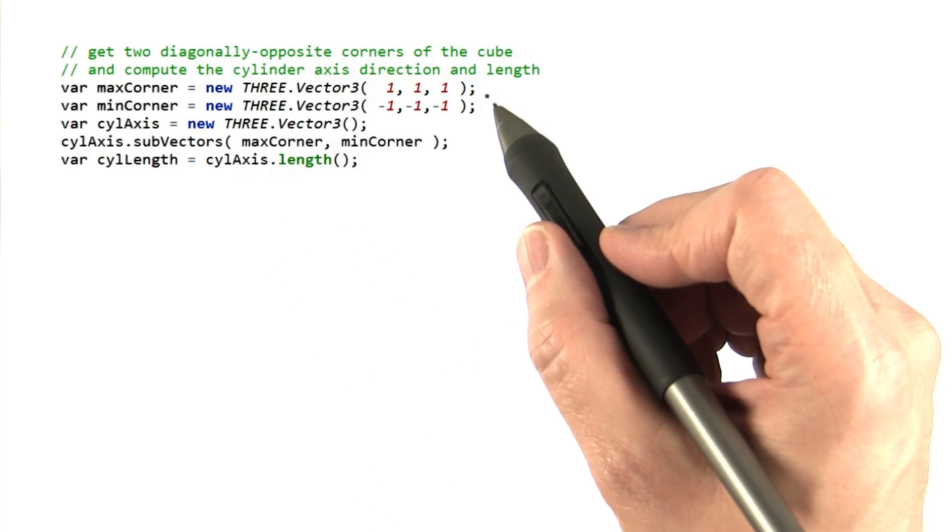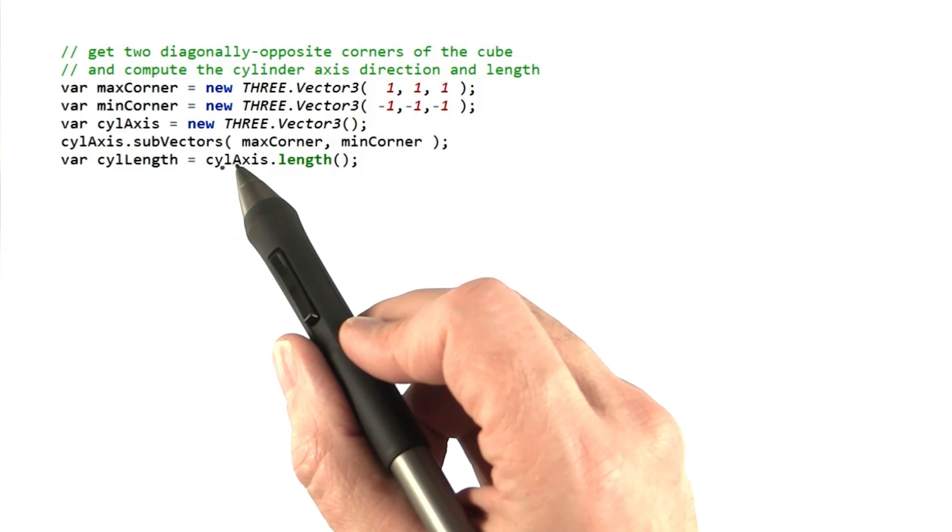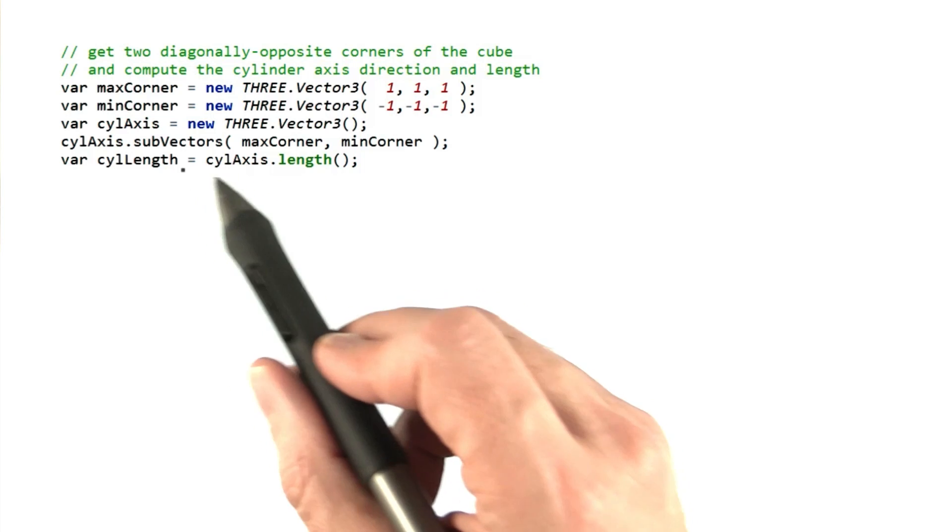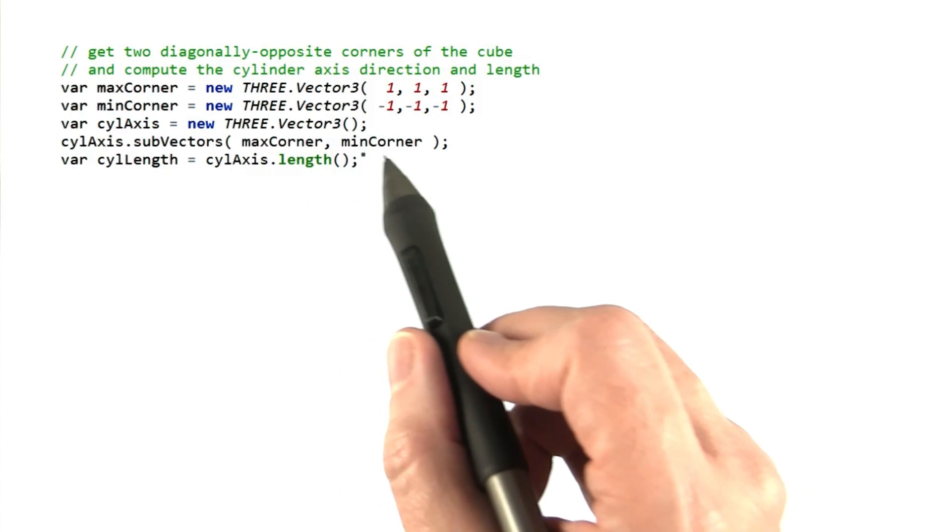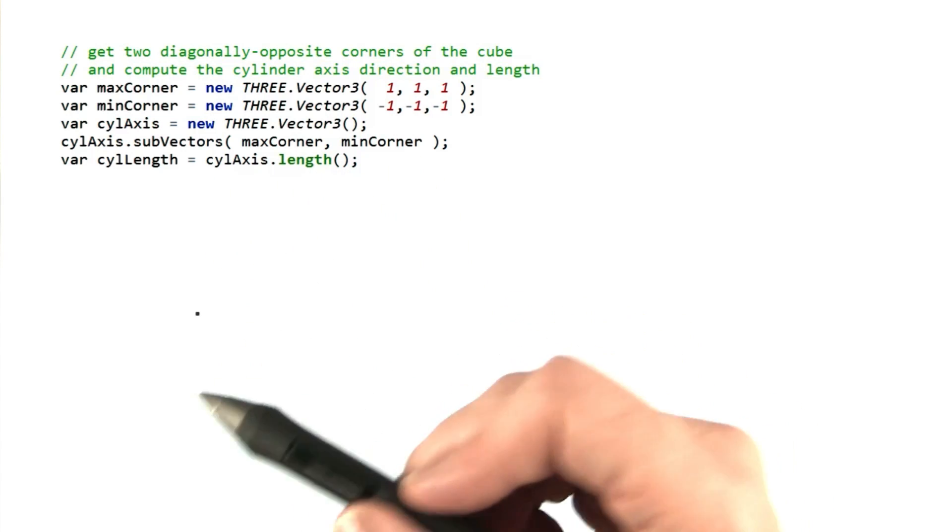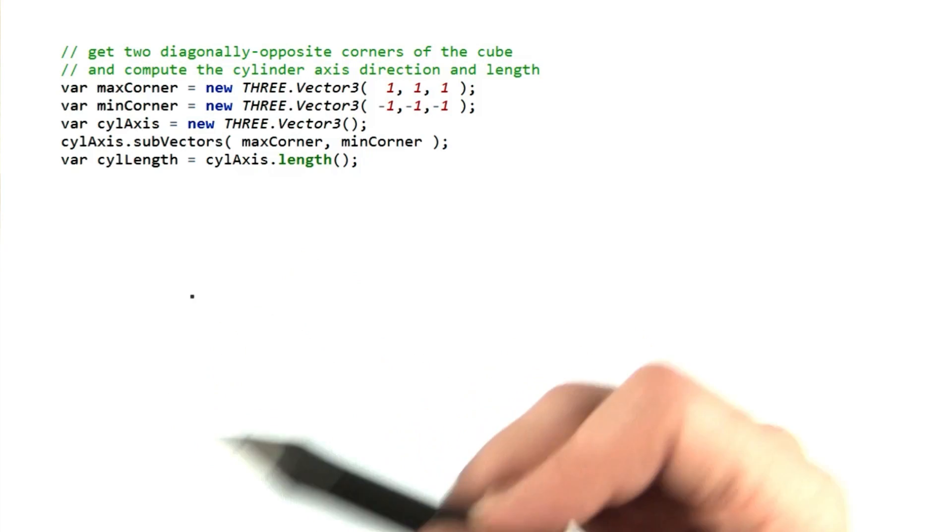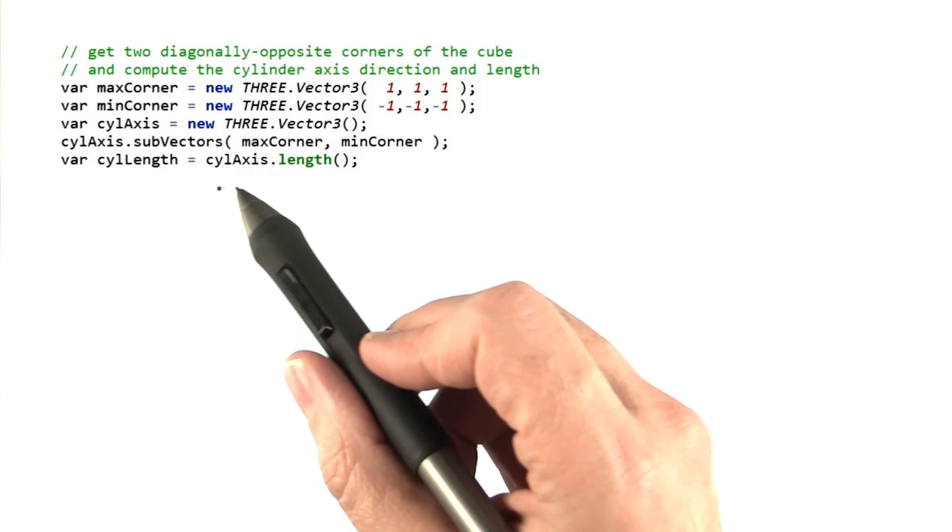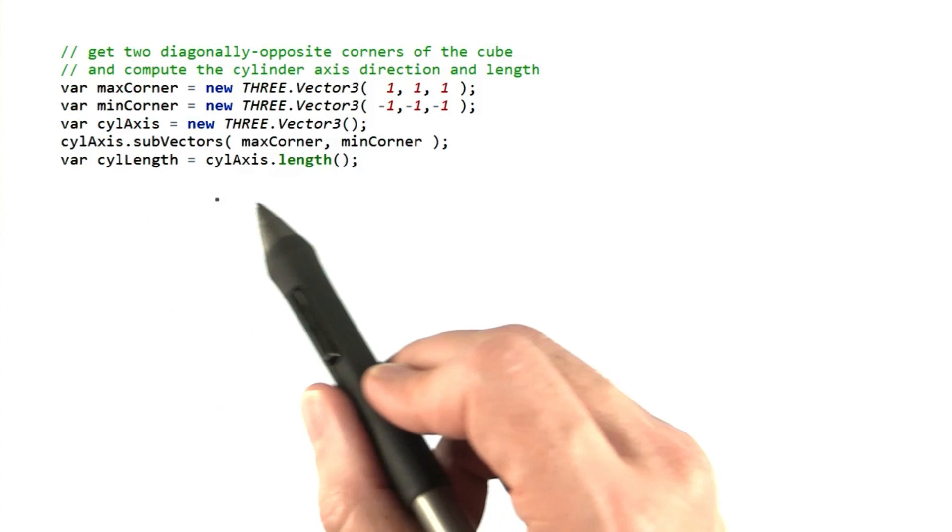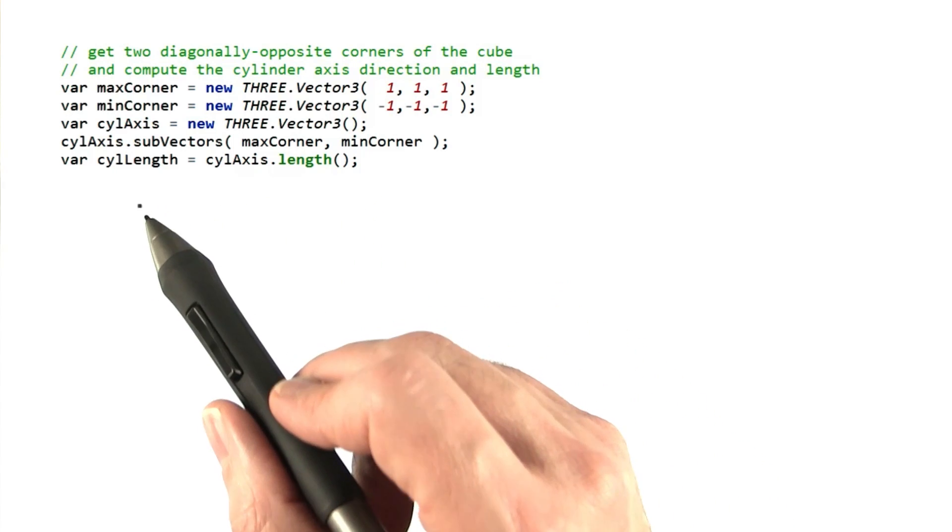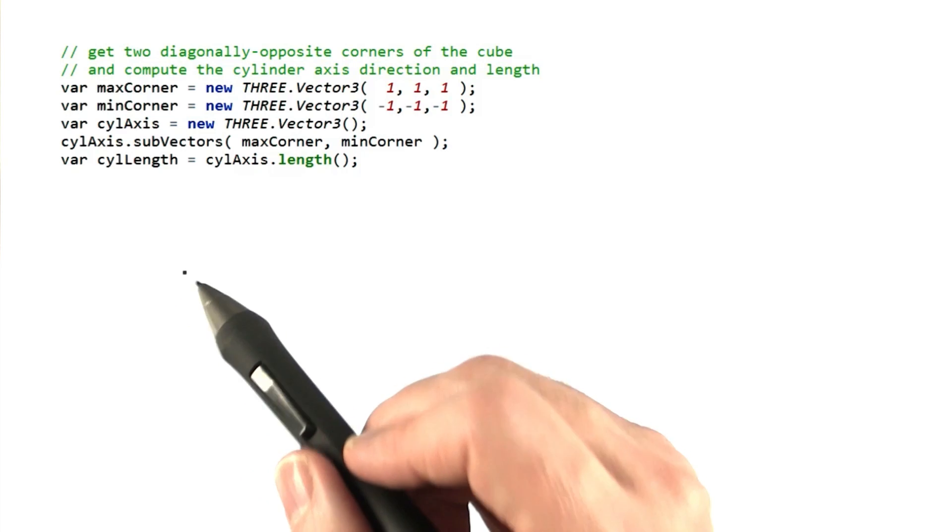To find the cylinder's axis direction and length, I set up the two corner locations. I then subtract one vector from the other using the subvectors method, giving a vector from one point to another. There are a huge number of vector and matrix operations supported in 3.js. Subtraction is just one of many. Once we have the cylinder axis, this last line of code computes the length of this axis, which we'll need for knowing how long to make the cylinder.